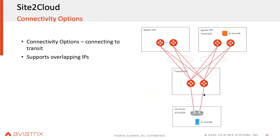This solution is active-active — everything is active-active from the on-prem side. You deploy two gateways on-prem and two on the transit VPC side. It will build an active mesh tunnel back and forth, and that's how we provide the connectivity.